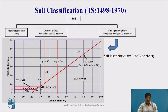Now let us come to the classification of fine-grained soil. Fine-grained soil has more than 50% passing the 75-micron sieve, meaning all particles are of very fine size. In such cases, the classification is totally based on the A-line chart or plasticity chart. In the plasticity chart, the x-axis shows the liquid limit and the y-axis shows the plasticity index. There is an inclined line called the A-line with its equation given, plus two vertical lines at liquid limit 35 and liquid limit 50, and a hatched zone between plasticity index 4 and 7.